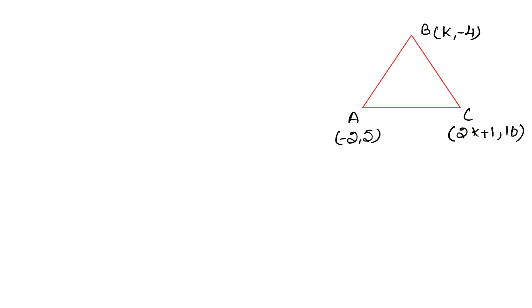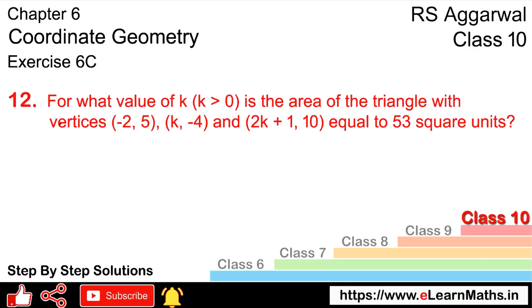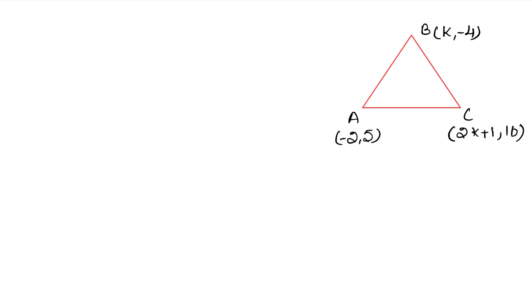ये बताना है। तो देखिए, मैंने triangle बना लिया है। मैंने A, B, C vertex रखे हैं — पहले वाली value A vertex की, दूसरी B की, और तीसरी C vertex की। Area दे रखा है 53 square units।